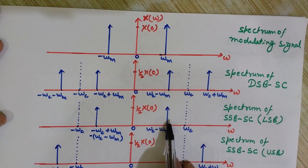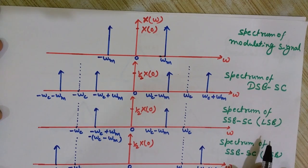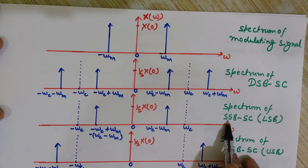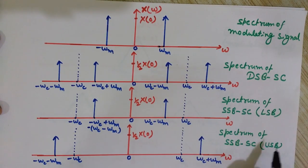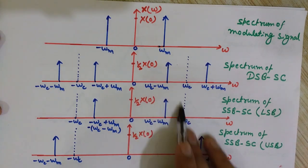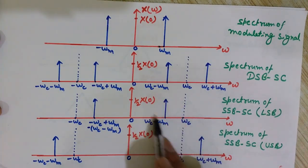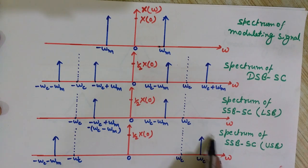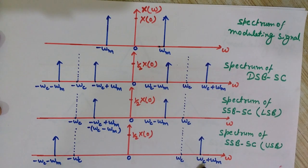In DSB-SC we have two sidebands. In SSB-SC we have only one. There are two cases for SSB: transmitting the lower sideband (LSB) at ωc − ωm, or transmitting the upper sideband (USB) at ωc + ωm. The LSB is at frequency less than the carrier, and the USB is at frequency greater than the carrier.